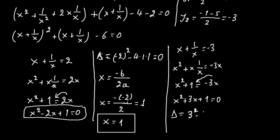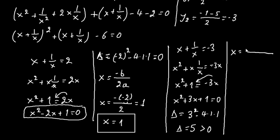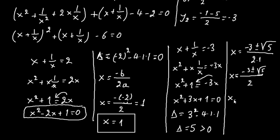We find the discriminant: D equals 3 squared minus 4 times 1 times 1, so D equals 9 minus 4, which is 5, and that is greater than 0, so we have solutions. From the formula, x equals minus b, where b is 3, plus or minus square root of D, which is 5, over 2 times a, where a is 1. So x equals minus 3 plus or minus square root of 5, all over 2. Our two solutions are x₃ equals negative 3 plus square root of 5 over 2, and x₄ equals negative 3 minus square root of 5 over 2.